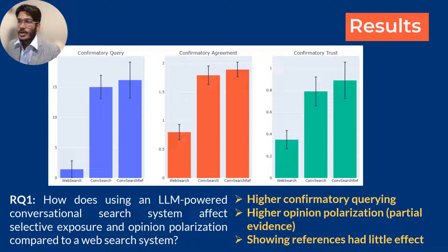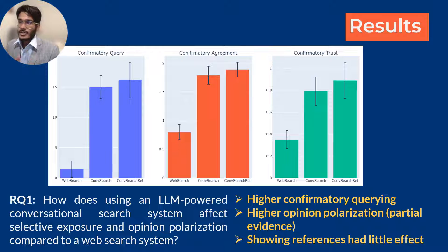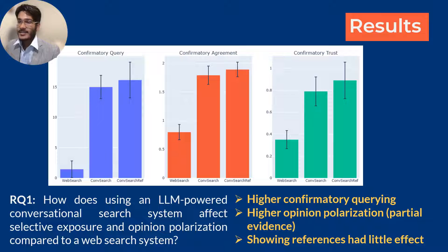We found higher confirmatory querying in conversational search than web search, and partial evidence for higher opinion polarization in conversational search. Surprisingly, showing references had little impact — we only saw 0.43 clicks per session, which is really low. It is now clear that conversational search systems are more susceptible to selective exposure and opinion polarization. This raises the question: what would happen when we make these LLMs opinionated?